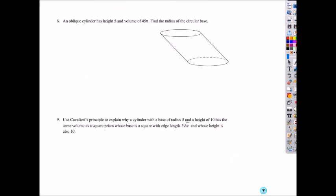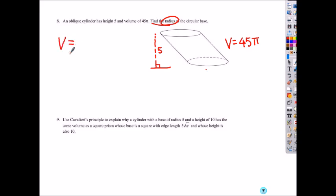So now let's do a few more example questions. Number eight: an oblique cylinder has a height of 5 — so go ahead and add it to the diagram. The height is 5, always perpendicular to the bottom base. And the volume is 45π. Yesterday we only found the volume of a right prism or right cylinder, but this one is oblique. Can we still use the same volume formula? Yes, because it has the same base and same height. So it's asking to find the radius. First write the formula: volume equals big B times height.